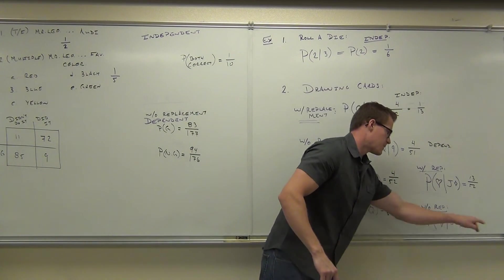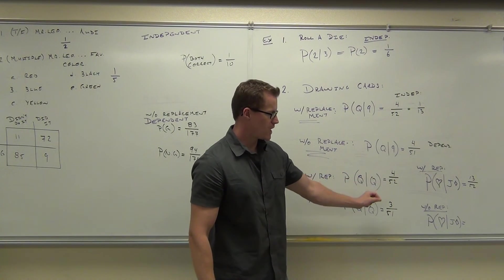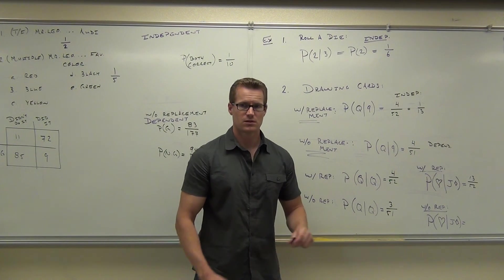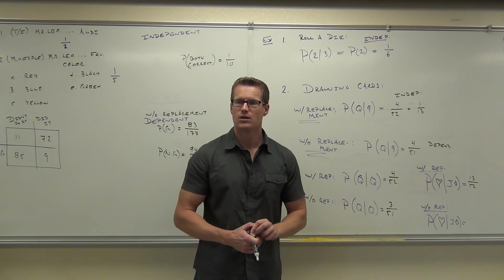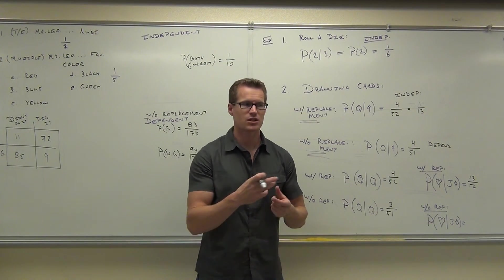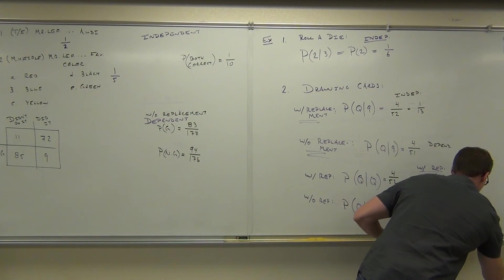Now let's say we don't put the jack back without replacement. Probability of selecting a heart given you selected a jack of diamonds. Jack of diamonds. Why 13? There's still 13 hearts. We took out a jack of diamonds, right? So we didn't touch the hearts. There's still 13 of them. How many cards?